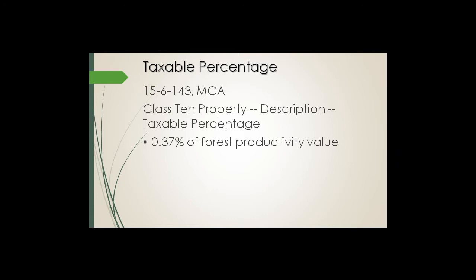To show a comparison: for ag land that fractional percentage is 2.16% rather than 0.37%. Residential is 1.35%. Again, forest is 0.37% — in other words it is pennies on the dollar going from the value to the taxable value.